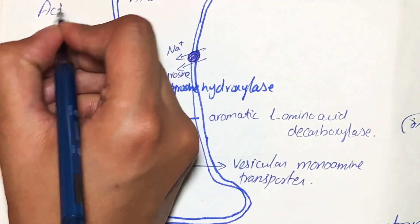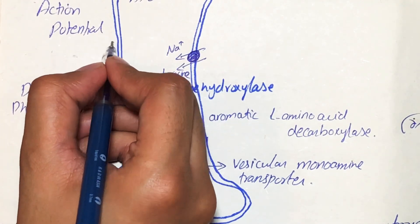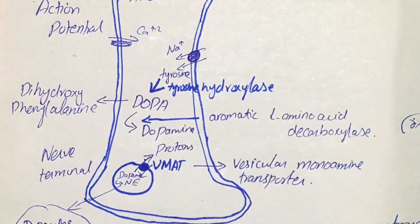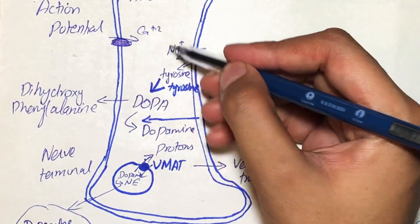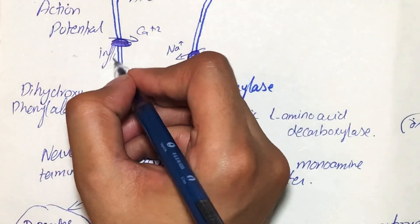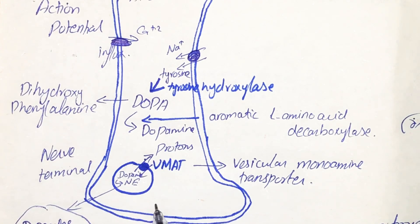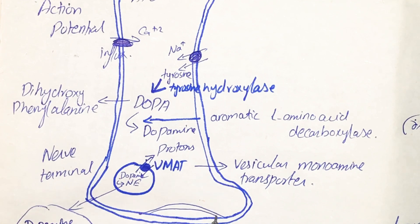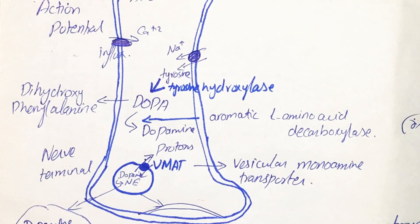When an action potential arrives, there is an influx of calcium ions into the cytoplasm of the neuron through calcium channels. After the influx of calcium ions, the vesicles — which contain norepinephrine as the primary neurotransmitter — fuse with the membrane of the neuron and cause the release of neurotransmitters into the synaptic cleft.